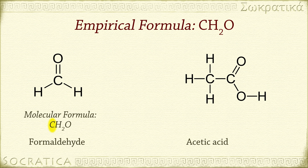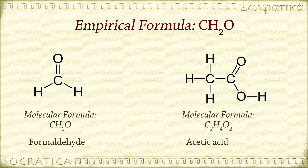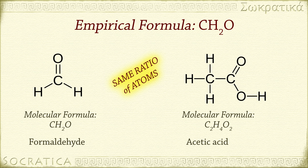One atom of carbon, two atoms of hydrogen, and one atom of oxygen. By contrast, the molecular formula of acetic acid is a multiple of its empirical formula. If you multiply the empirical formula by two, you get the molecular formula of acetic acid, C2H4O2. Notice the ratio of atoms is the same, but in each molecule of acetic acid there are actually two atoms of carbon, four atoms of hydrogen, and two atoms of oxygen.